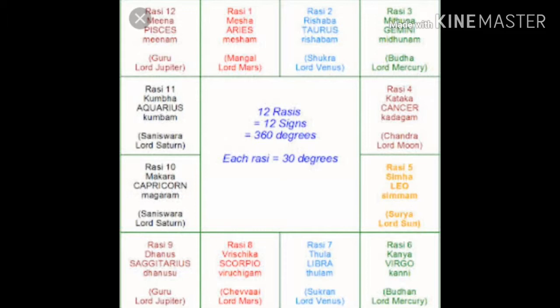At the time of your birth, the Moon will be placed in one of these 12 signs. So suppose the Moon at the time of your birth was placed in the sign of Mesha or Aries — then your Janma Rashi is Mesha or Aries. If Moon was placed in Capricorn, your Janma Rashi will be Makar Rashi. If Moon was in Leo, your Janma Rashi is Simha Rashi. The Janma Rashi is determined by the placement of the Moon. Likewise, your Janma Nakshatra is also determined by the placement of the Moon in the respective sign.